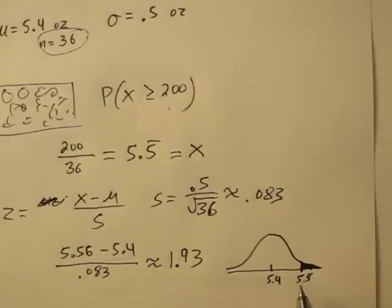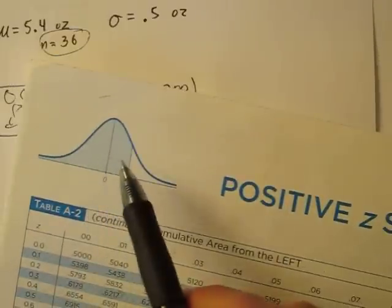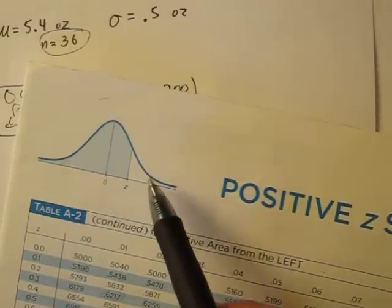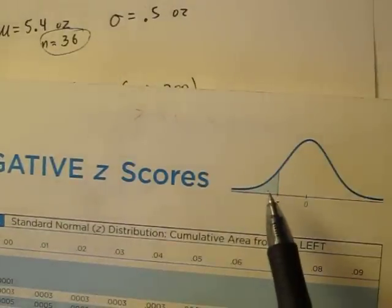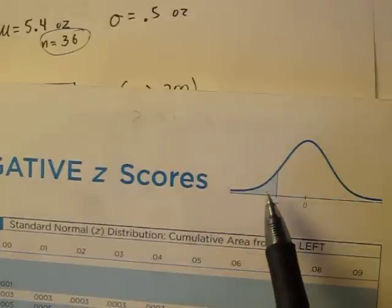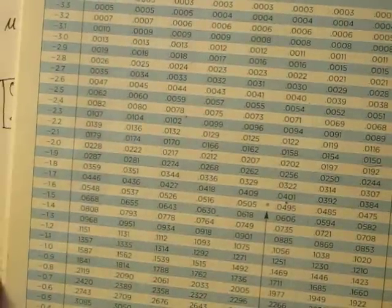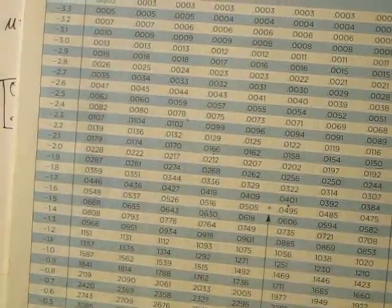So looking up 1.93. And if we look at the positive z-score, it's going to give us that left side area again. A little trick to use here is just jump over to the negative one. If we look up negative 1.93, we won't have to subtract by 1 as we did in the previous problem. So if we look up negative 1.93, 0.0268. So our probability is 0.0268.